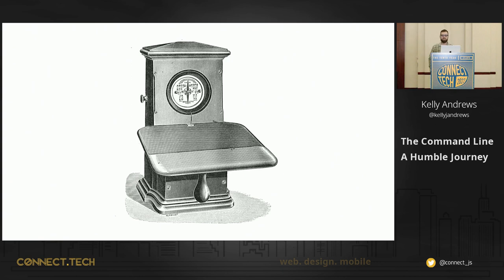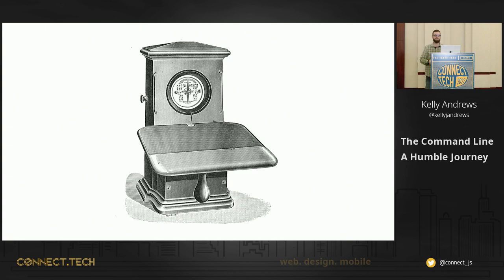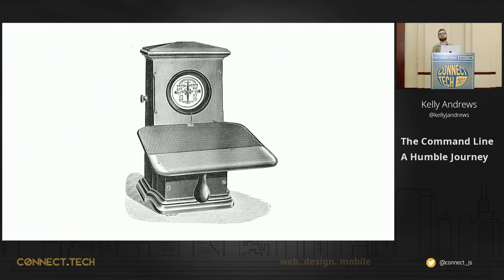There were several varieties of needle telegraph that popped up — some good, some not. The first, by a Pavel Schilling, used a single needle that could be swung left or right using current, with letters encoded based on the sequence of swings. This was perhaps the first binary coding of text in history.